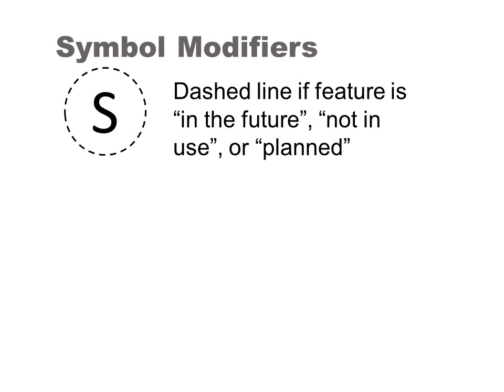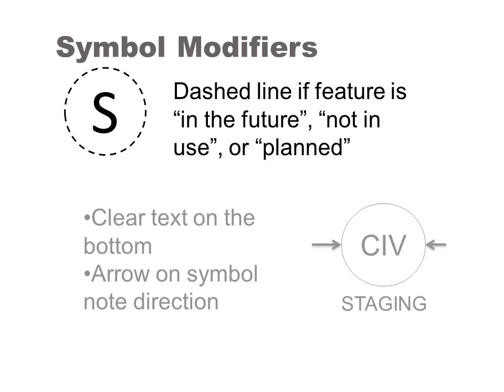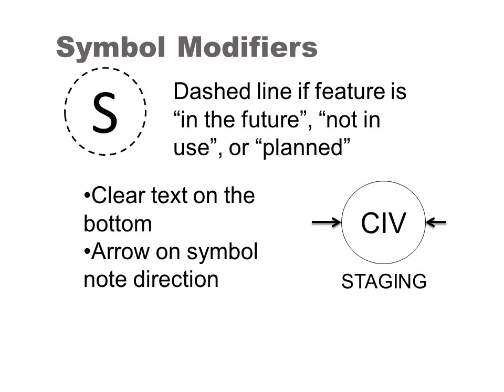There are ways to enhance or modify the feature location. For example, a dashed line can be used to indicate a feature that is in the future, not in use, or planned. An arrow can also be used to augment the symbol to indicate the direction or to show where people should assemble. With all symbols, clear text should be used to make the meaning of the symbol more understandable.